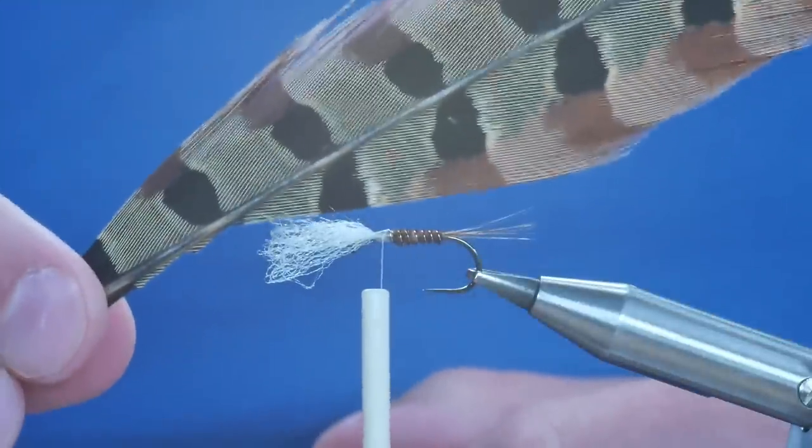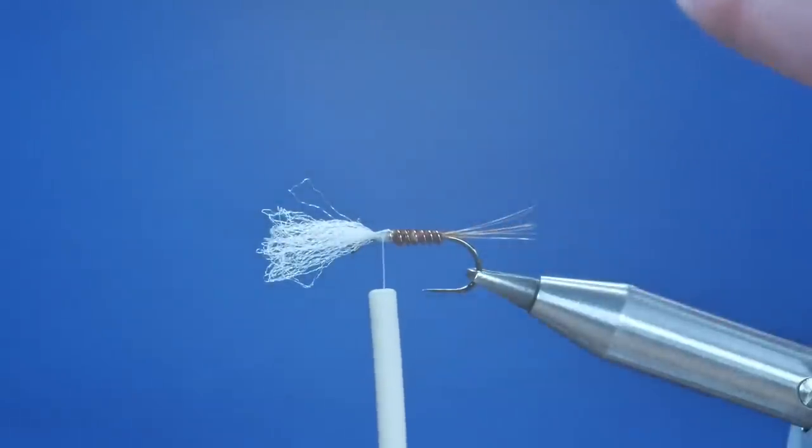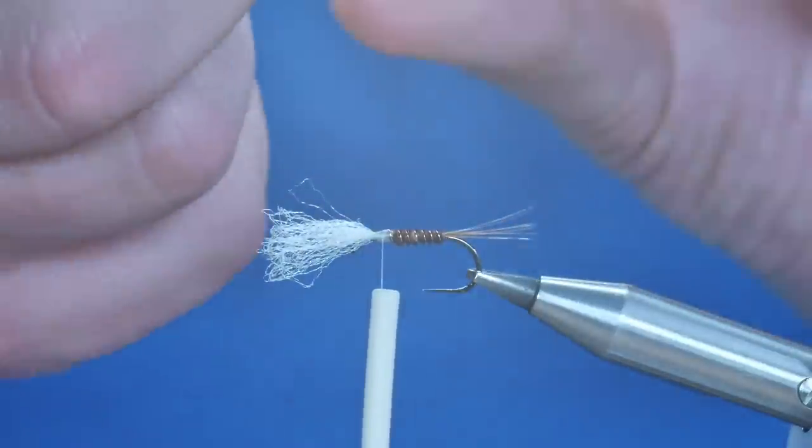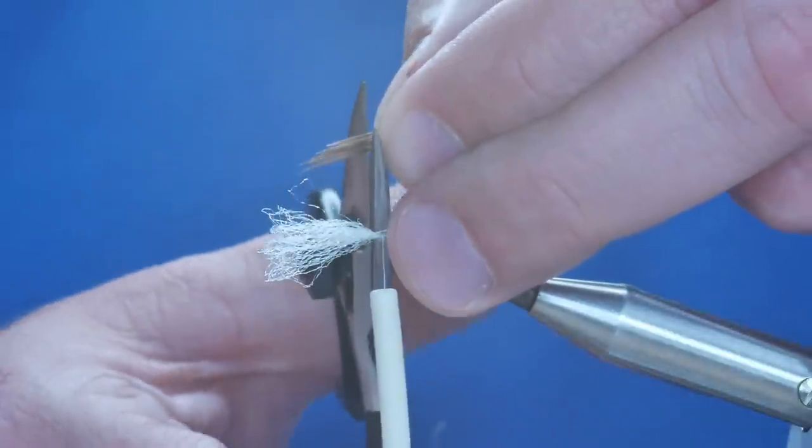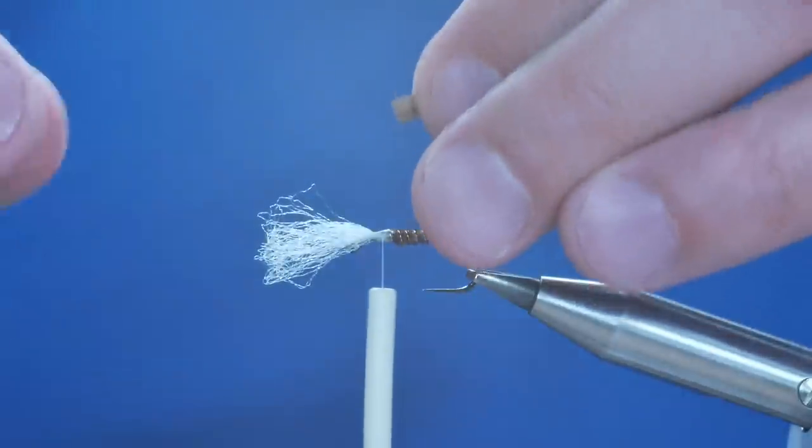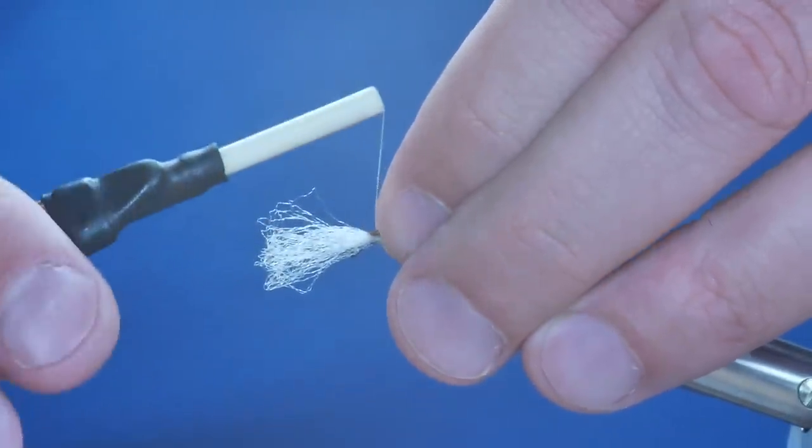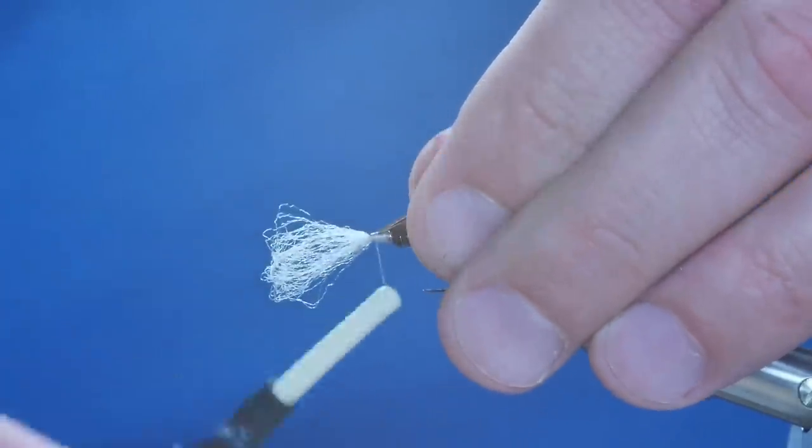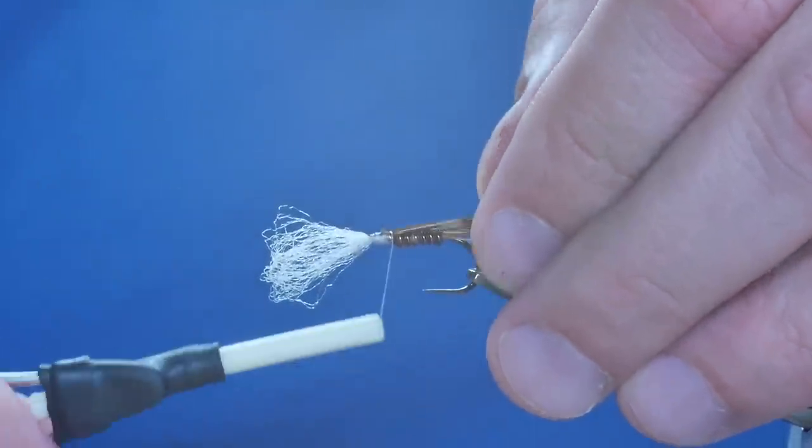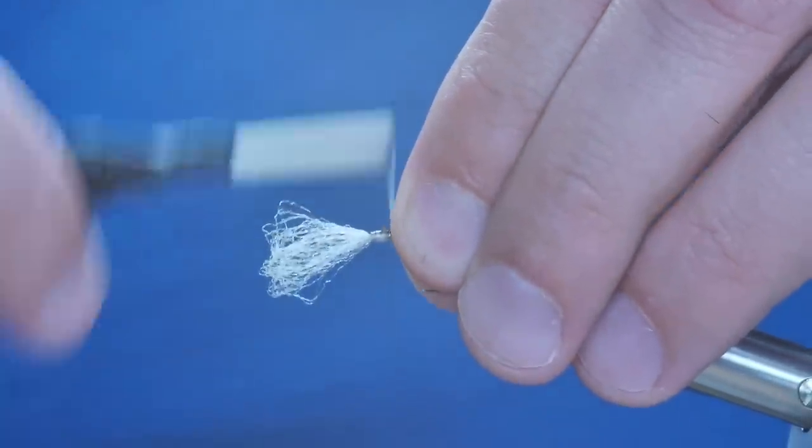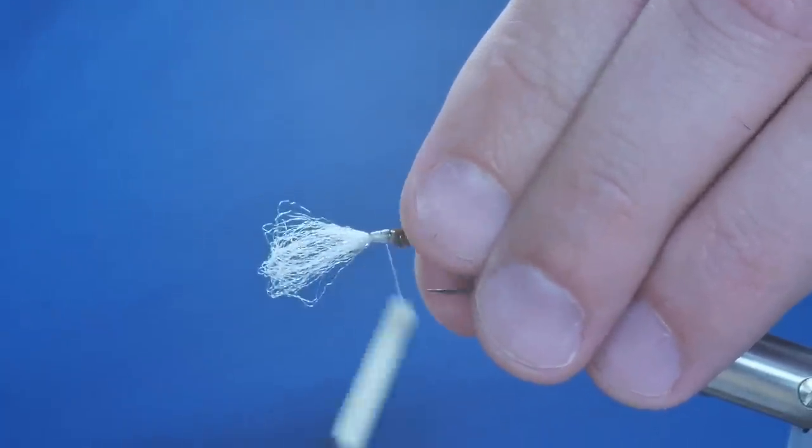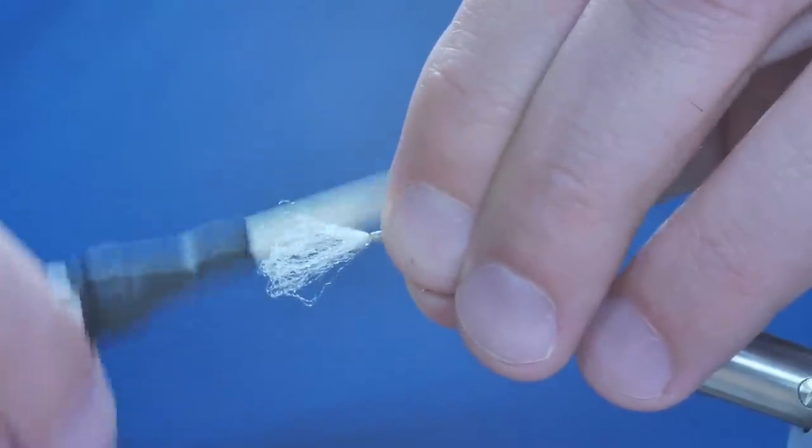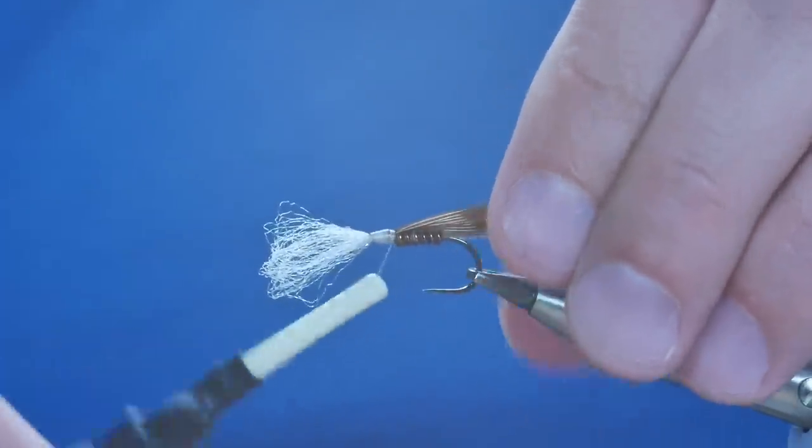Next, I'm going to need some more pheasant tail fibers to make a thorax cover. I'm going to take slightly more than I did for the body. And to make my life a little easier, I am just going to snip away the tips here because I don't need them. So I'm going to catch the tips, well what's left of the tips, in here at the body, and then come back to secure in my thorax cover. Now I'm just taking a little bit of time to get this part nice and flat.